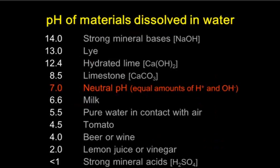If you look at the pH of materials dissolved in water, they range from less than 1 to 14. A pH of 1 would be a very acidic solution, with 14 being a very basic solution. 7 is neutral. The range you'll typically find in soilless media is a little bit smaller than that — usually around 3.5 to 4 on the low side, to about 8.5 on the high side.